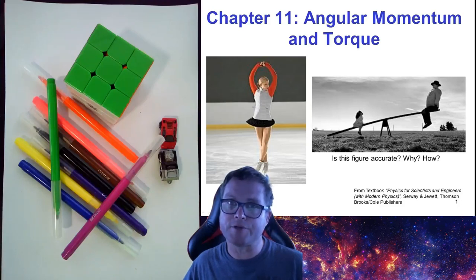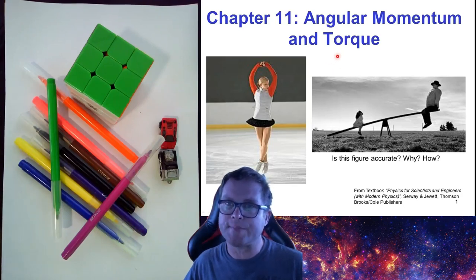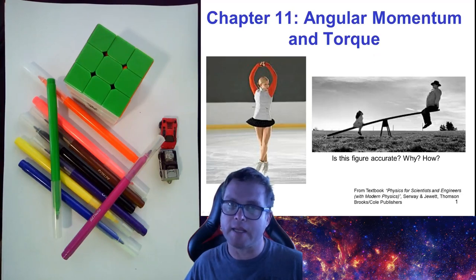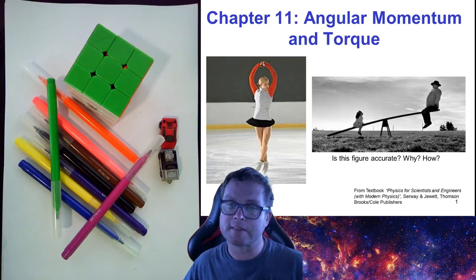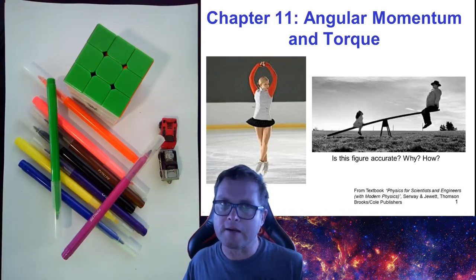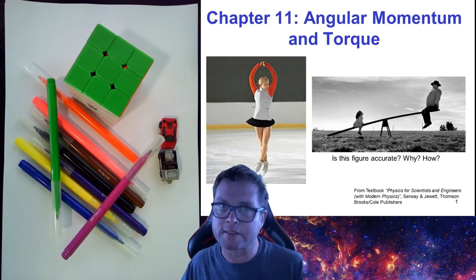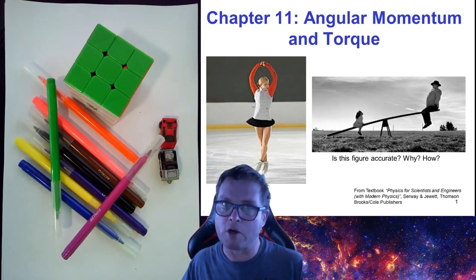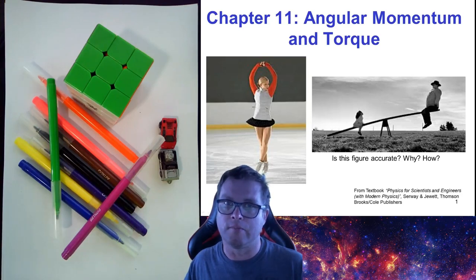Now we look at chapter 11, which deals with angular momentum and torque. The main focus of the chapter is going to be on torque. As we work through this chapter, I'd like you to look back at this figure showing two people sitting at different positions on a seesaw, and think about whether this figure is accurate, whether it's possible, and under which conditions it would be possible.